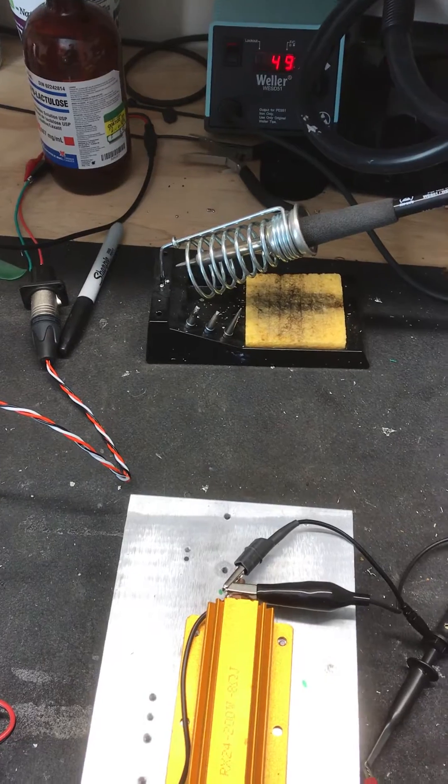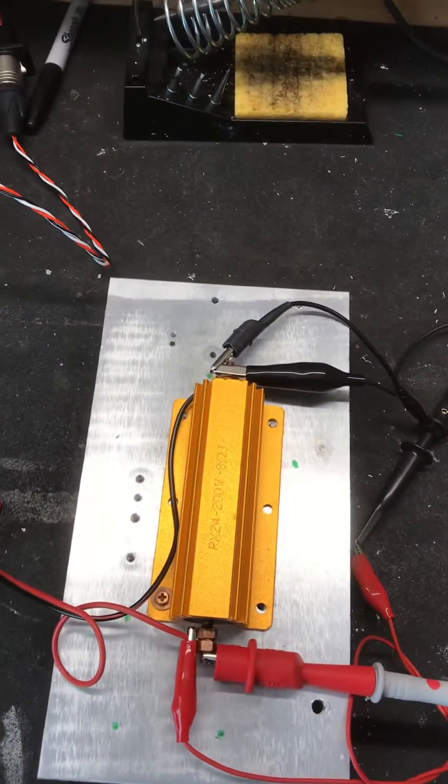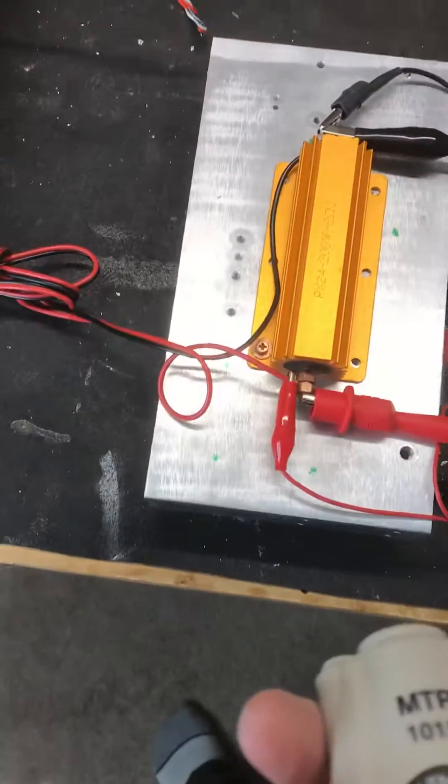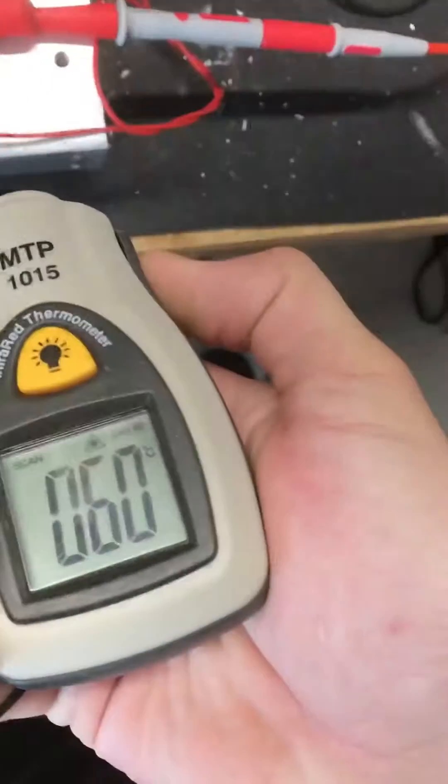And let's see what we get for temperature on this resistor. This resistor's probably hot. She's 60 degrees, so whoo!